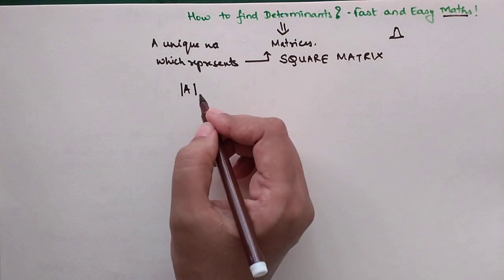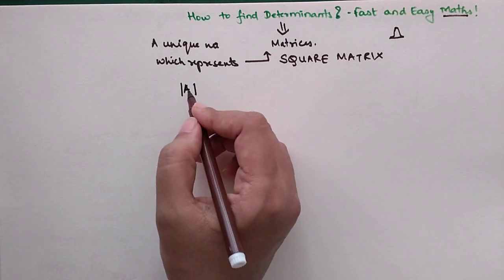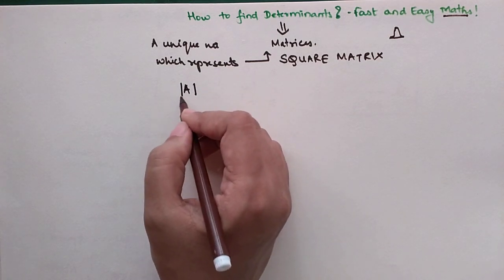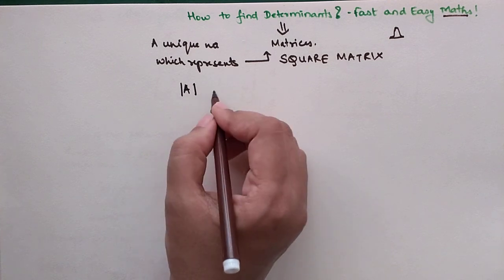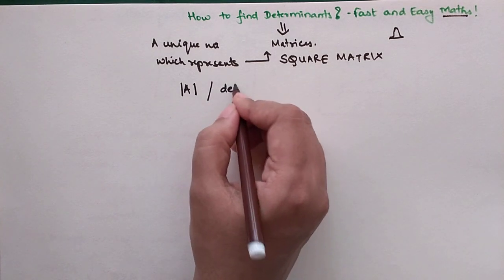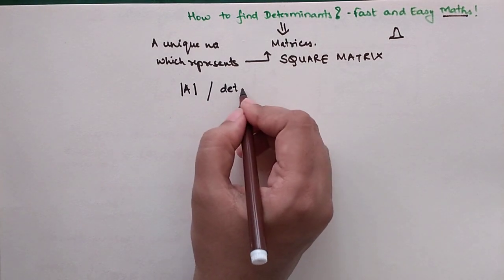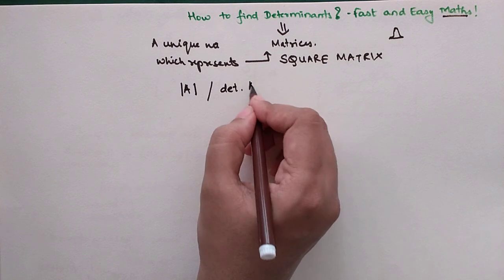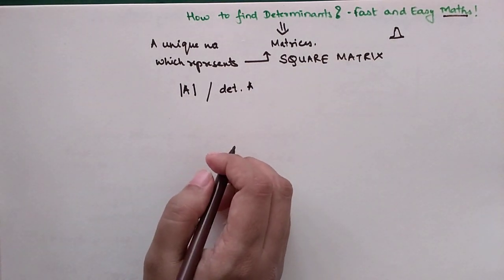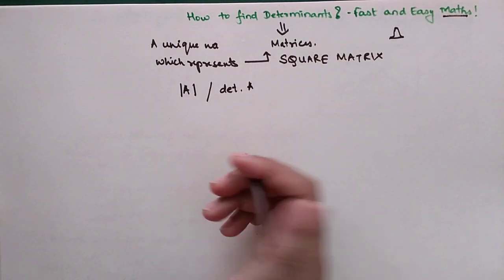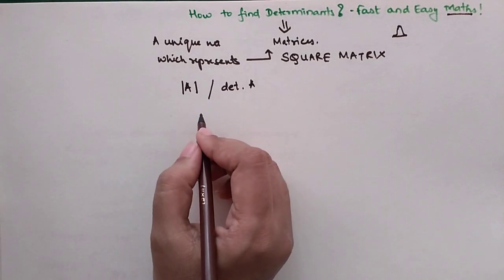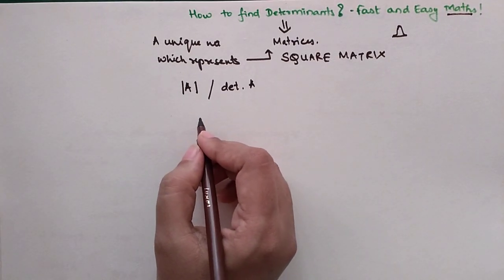Now, how do you represent a determinant? If we want to represent the determinant of matrix A, we represent it with two vertical bars around A, or we can also write it as det(A).